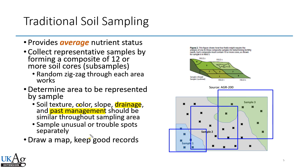If you have a trouble spot or a very unusual spot, you may want to sample that separately as well. The most important thing is to be consistent in depth and to collect a lot of cores per sample. One sample sent off to the lab should be at least 12 soil cores using a soil probe. You zig-zag across that area, sticking the probe in the ground 12 times, putting it in a bucket, mixing it up, and sending it off.